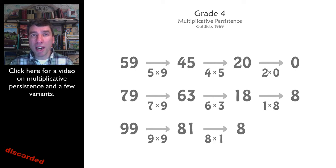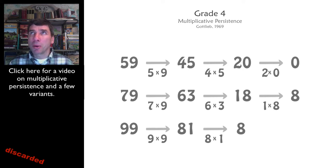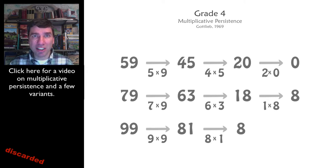There is one number under 100 that has a multiplicative persistence of 4 — that's a good problem to start with. A good problem to end with is: what is the largest multiplicative persistence possible? That's unsolved. It looks like it's probably 11.